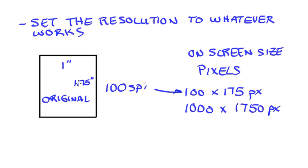Now let's take that same original and say that we want it to be 1000 by 1750 pixels. Well, same original, but it would need to be set to 1000 samples per inch in order to get my 1000 by 1750. So in this particular example, you can see that with a particular original, the resolution I set my scanner to, in order to get my desired on-screen size, is going to be dependent on the size of the original and my finished size. There is no magic number.